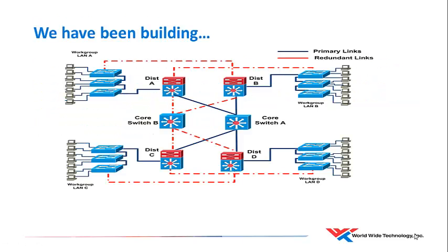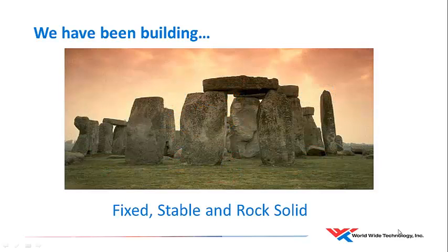For years, we've been building networks that look something like this — built with highly available devices that have redundant components and redundant paths. The networks we've been building are fixed, they're designed to be stable, and we hope that they're rock-solid.